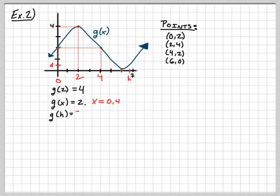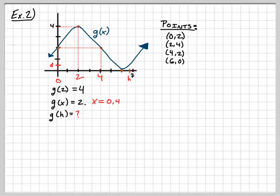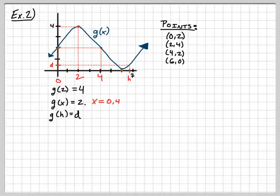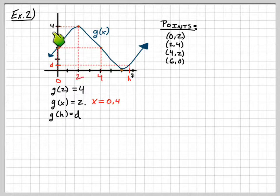Next question: what is g of h equal to? If I trace over to x equals h on the graph and read the corresponding height, that output is d — which is exactly why we drew that d value on the y-axis. So g of h equals d. This example is really just practice reading the graph: inputs are on the x-axis, outputs on the y-axis.